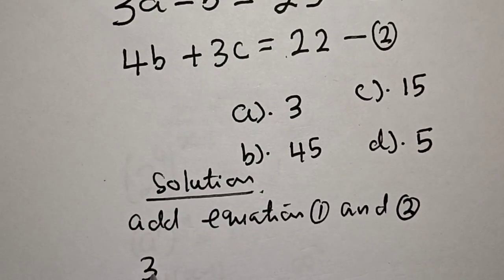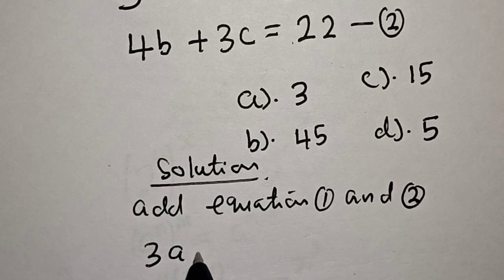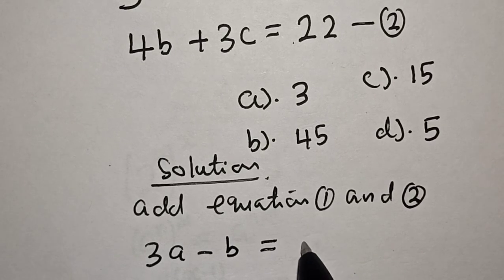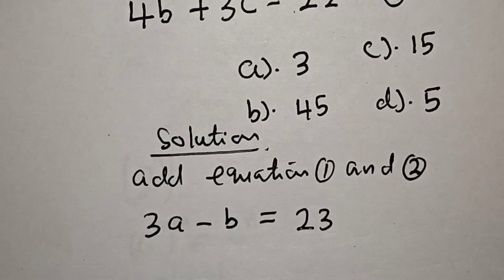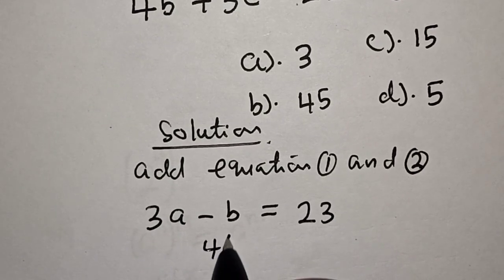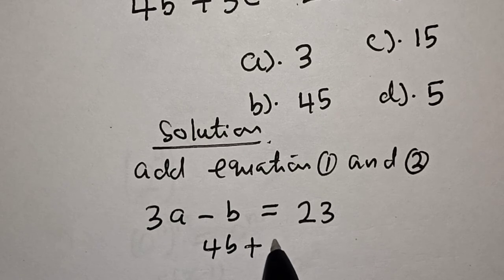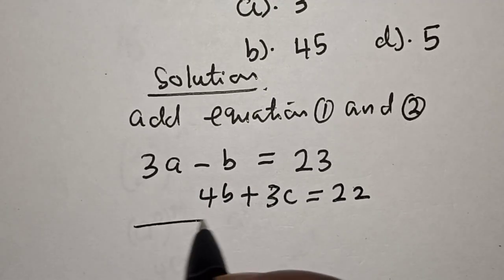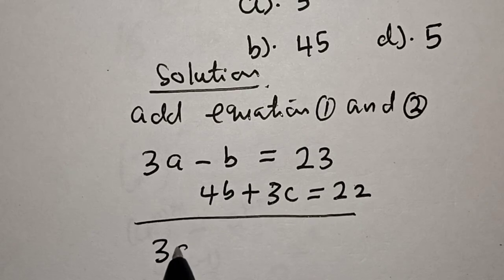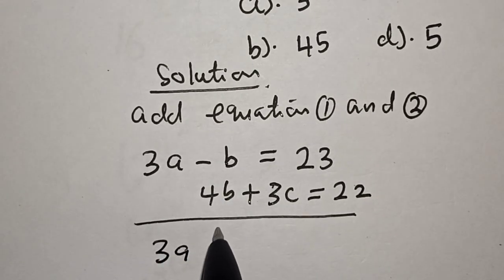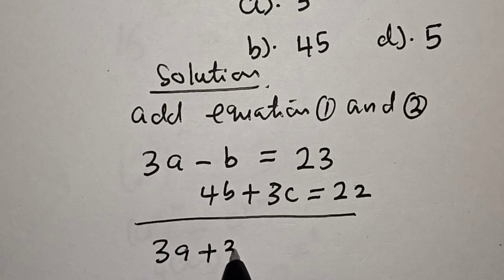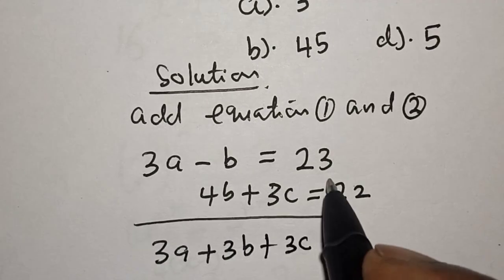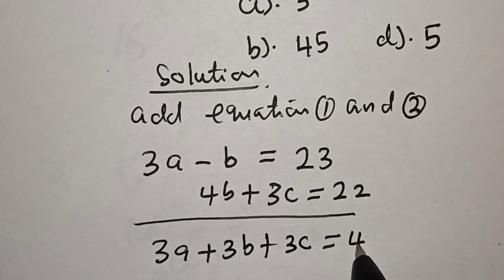We have 3A minus B is equal to 23, then we have 4B plus 3C is equal to 22. Then if you add the two together, we have 3A minus B plus 4B, this is plus 3B and plus 3C is equal to 23 plus 22, that is 45.